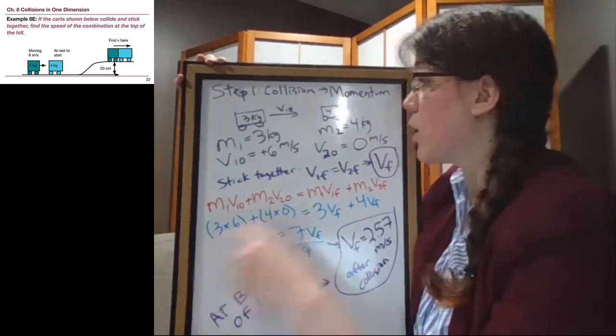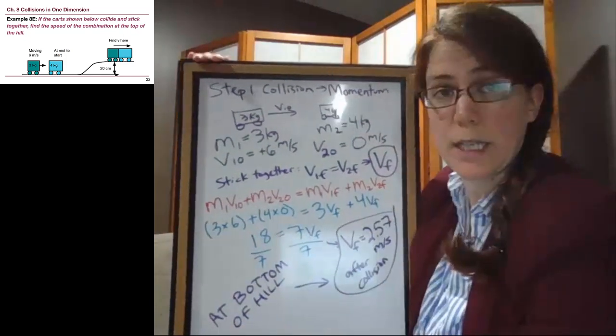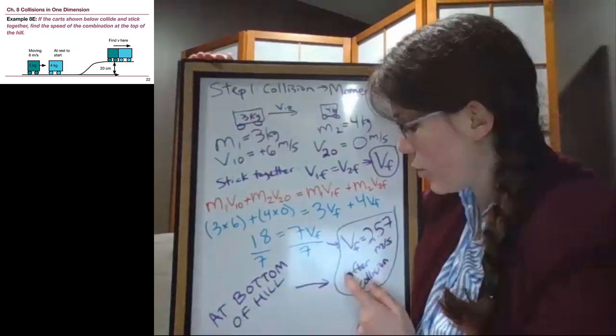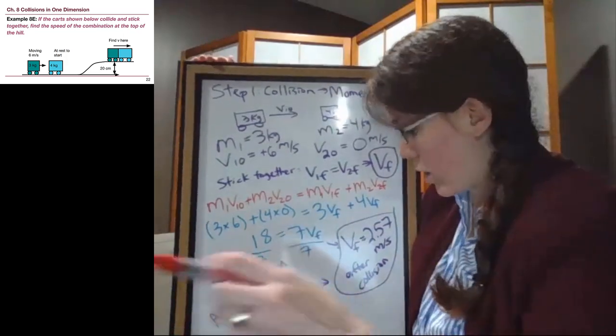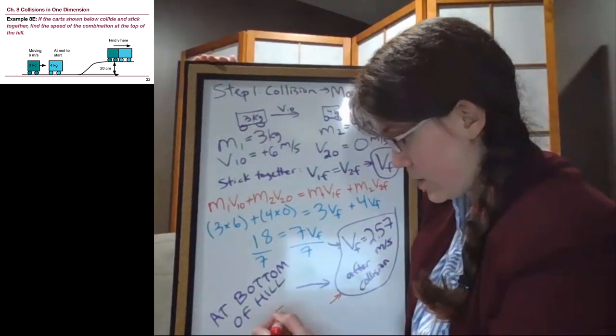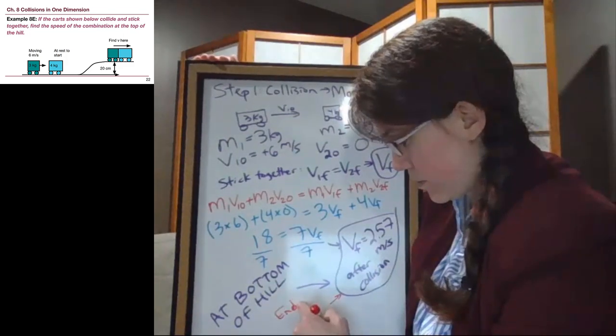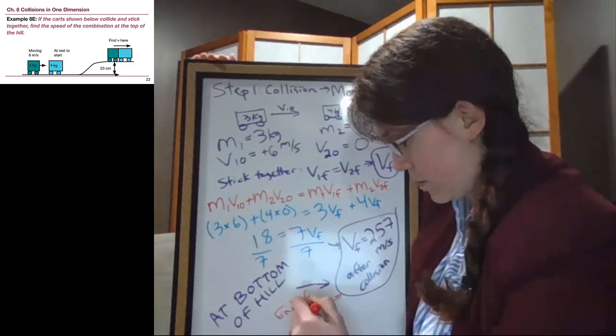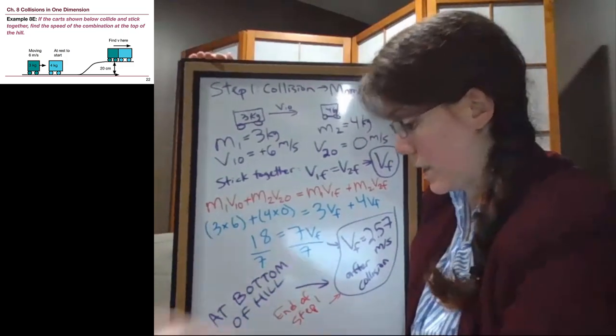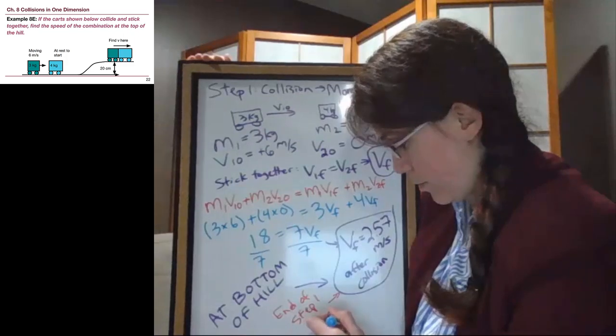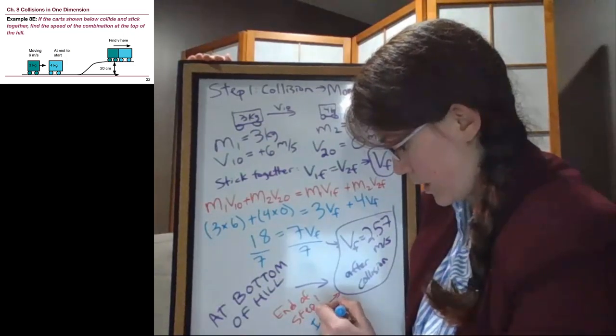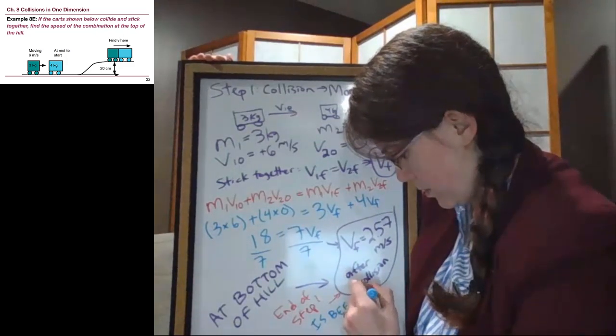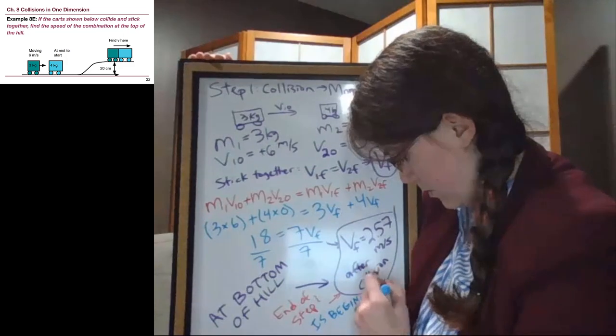which means this is the speed just at the bottom of the hill. Because the carts have not yet rolled uphill, we haven't even drawn it in, because that happens in step 2. And so just like before, the end of step 1 is the beginning of step 2.